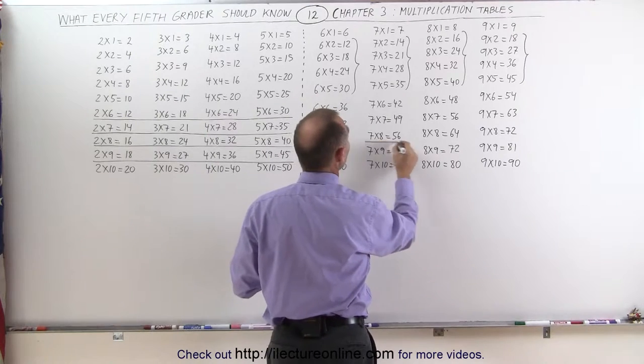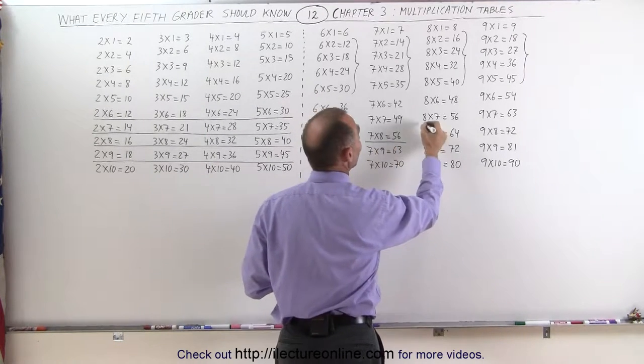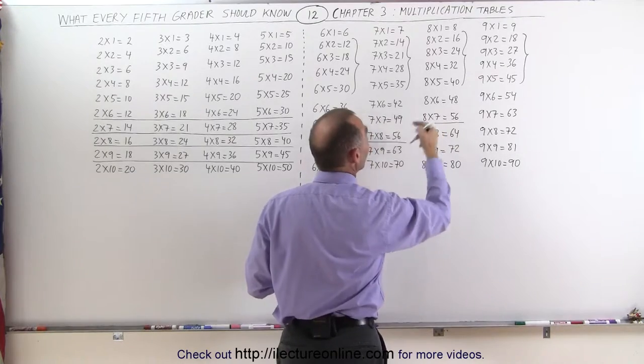such as 7 times 8 is 56, 5, 6, 7, 8, and 8 times 7 is 56, 5, 6, 7, 8.